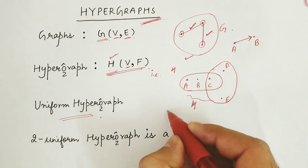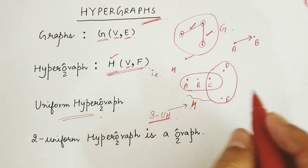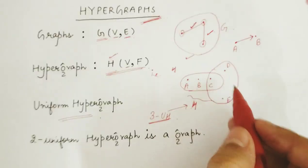For example, we have drawn this edge. This is a 3-uniform hypergraph because all its hyperedges are of size 3.